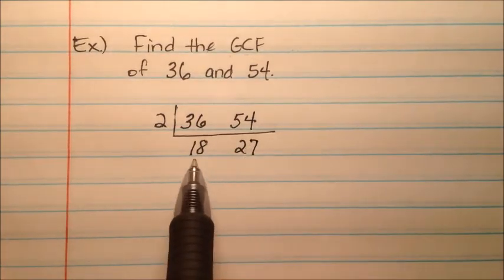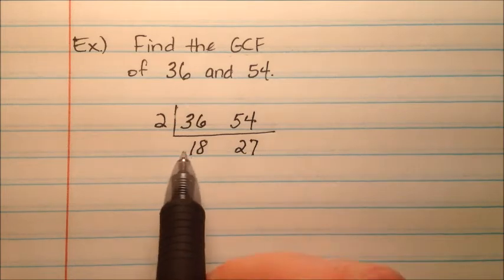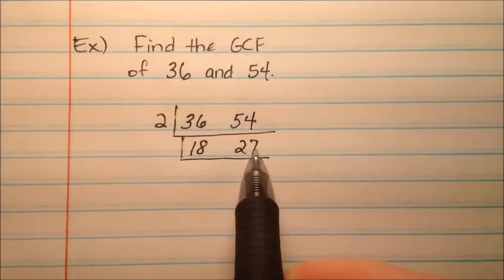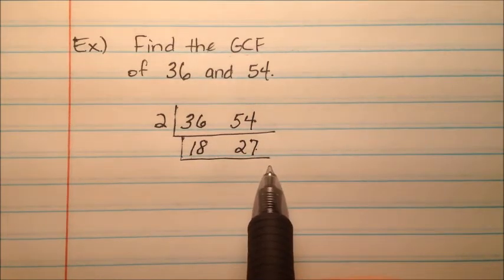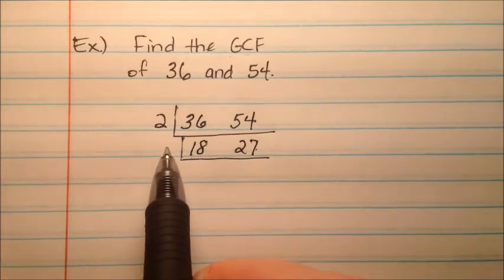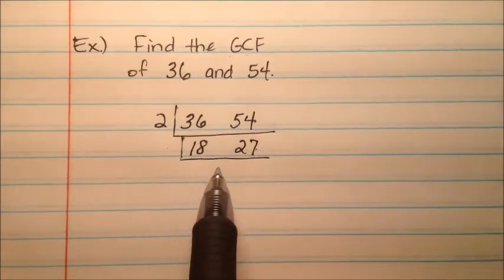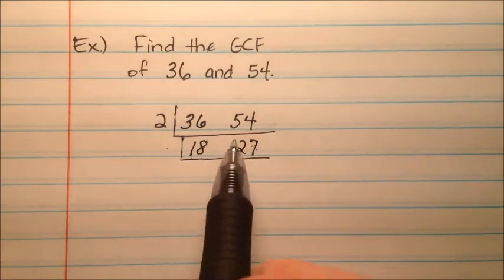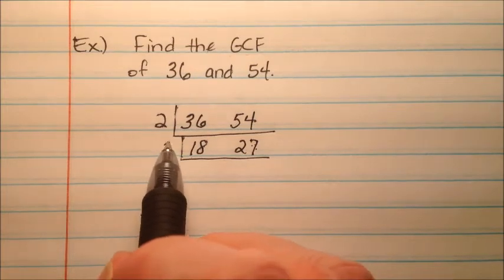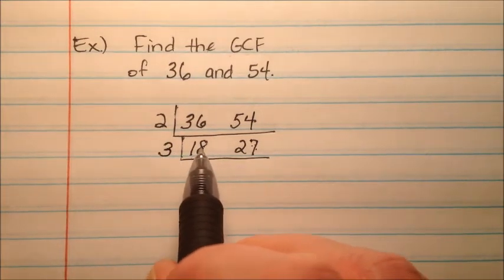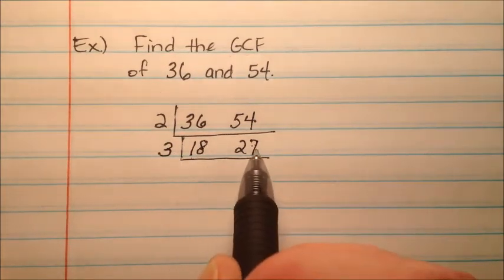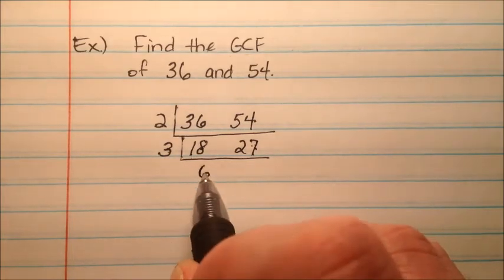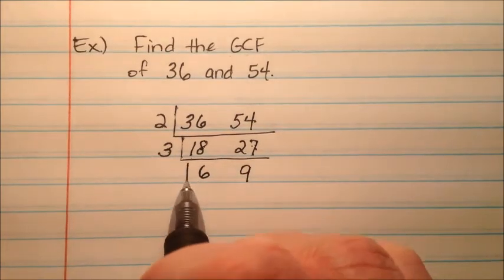Is there another number that will divide both 18 and 27 evenly? I notice 18 is even, but 27 is not, so I cannot divide by 2. But 3 will work: 3 times 6 is 18, and 3 times 9 is 27. So when I divide, I'll get 6 and 9.